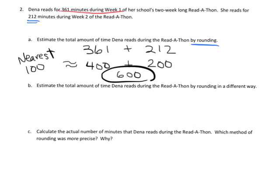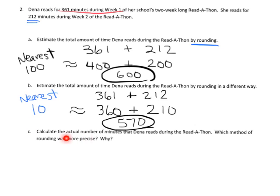And then the last problem here is calculate the actual number of minutes, which method of rounding was more precise. So let's add for real. So I'm going to stack those up vertically. 361 plus 212. And I'm going to add. So 1 plus 2 is 3. 6 plus 1 is 7. 3 plus 2 is 5. So the answer is 573 minutes is how long she reads.